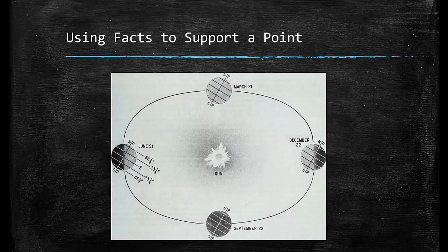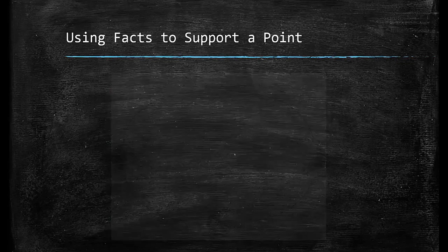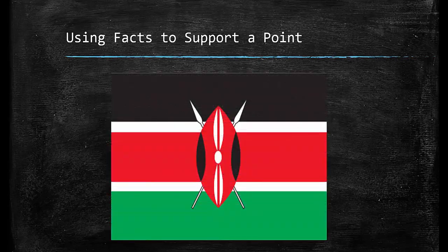Armed with these quotes, let's see how we can use a fact in an argument. A fact is something that cannot be disputed — the earth revolves around the sun. That's a fact. This is the national flag of Kenya. We could argue that the flag of Kenya adequately represents the people and lands of Kenya.